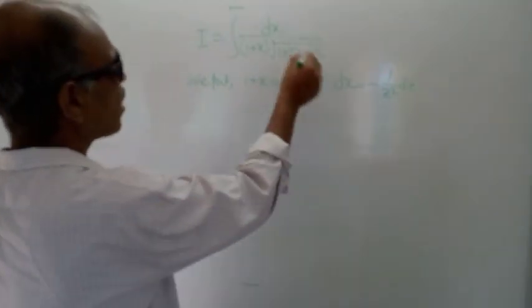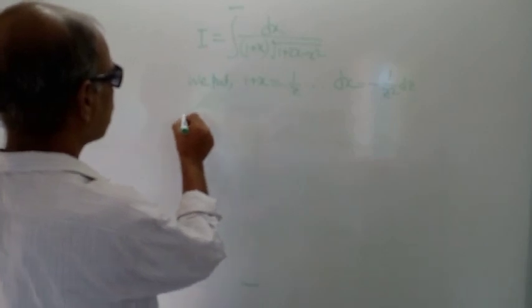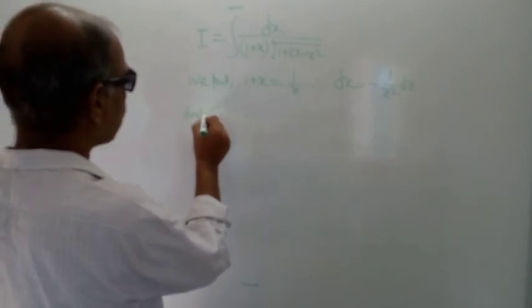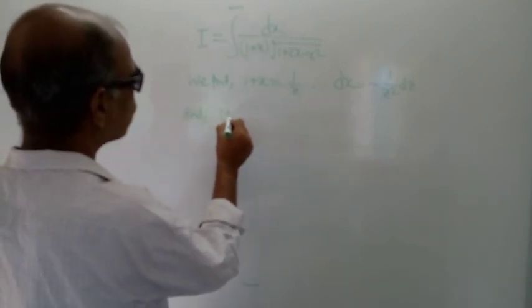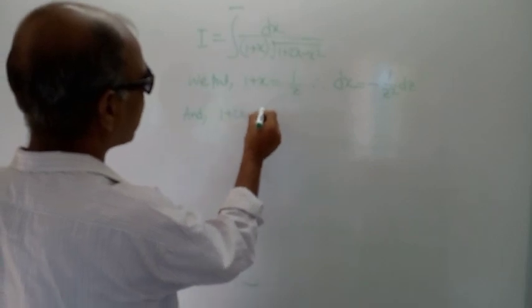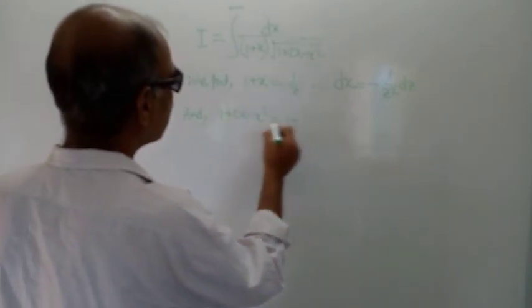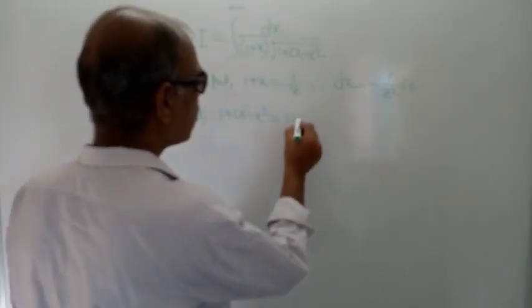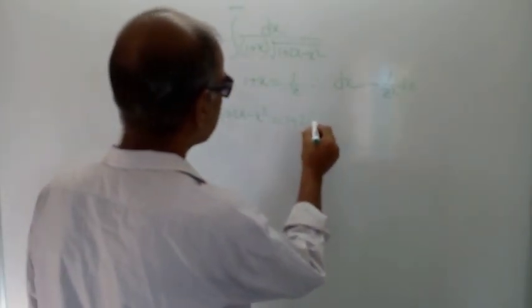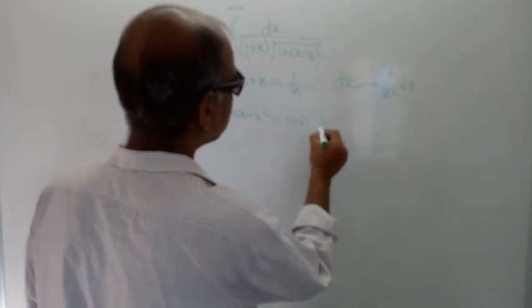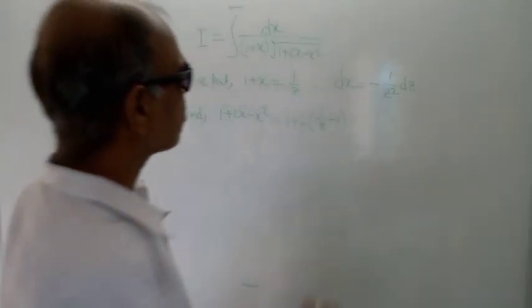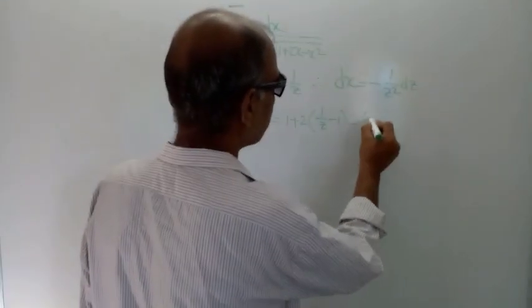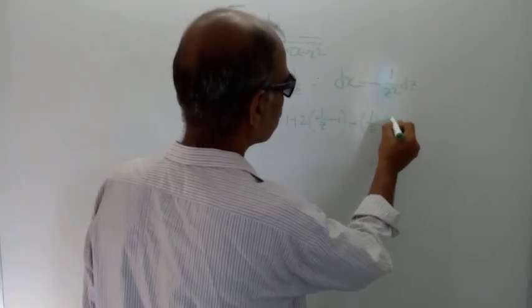We also need the expression for 1 plus 2x minus x squared in terms of z. From 1 plus x equals 1 by z, we get x is equal to 1 by z minus 1. So we replace x by (1/z minus 1), and minus x squared becomes minus (1/z minus 1) whole squared.